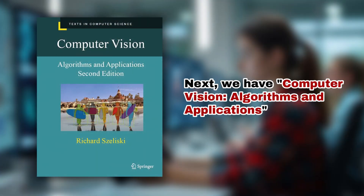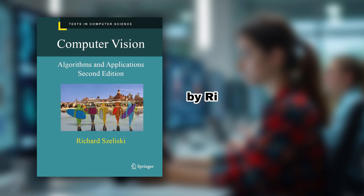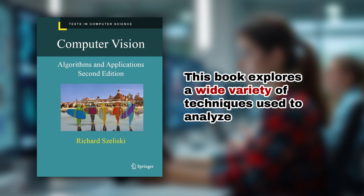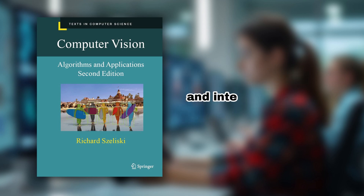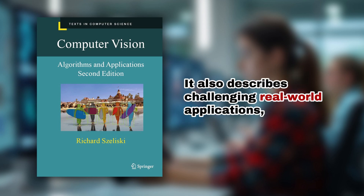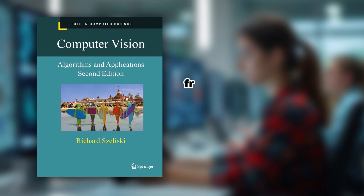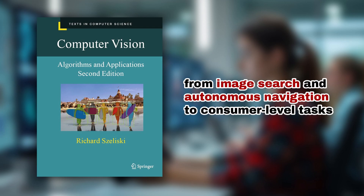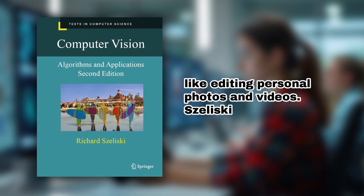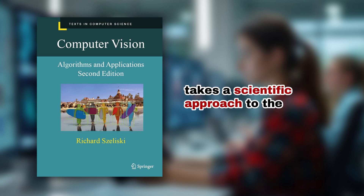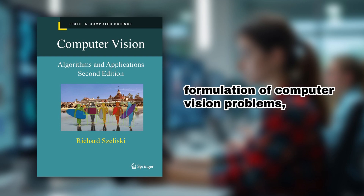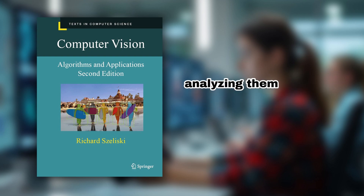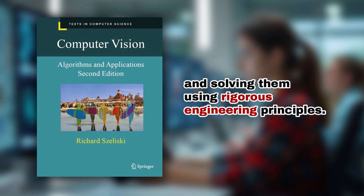Next, we have Computer Vision: Algorithms and Applications by Richard Szeliski. This book explores a wide variety of techniques used to analyze and interpret images. It also describes challenging real-world applications, from image search and autonomous navigation to consumer-level tasks like editing personal photos and videos. Szeliski takes a scientific approach to the formulation of computer vision problems, analyzing them with classical and deep learning models and solving them using rigorous engineering principles.